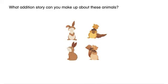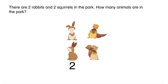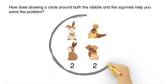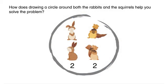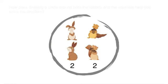What addition story can you make up about these animals? There are two rabbits and two squirrels in the park. How many animals are in the park? How does drawing a circle around both the rabbits and the squirrels help you solve the problem?